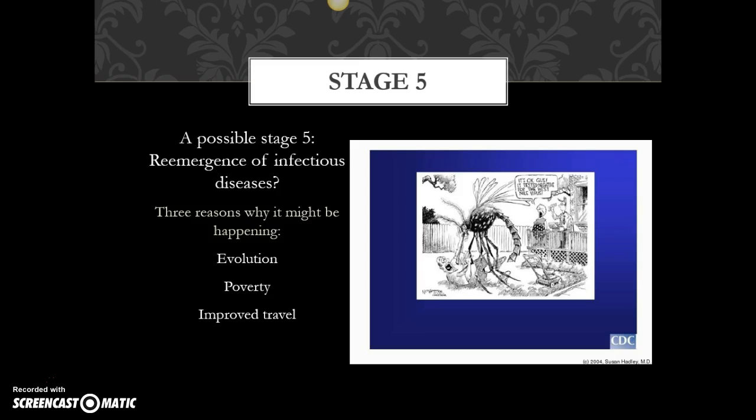This ties back to Haiti and cholera, and you can draw similar examples with Louisiana in the wake of Hurricane Katrina, where all of a sudden infectious diseases go up as access to clean water and other resources disappears. Improved travel is also a huge piece of this — we see this with things like the SARS outbreak, where a person got sick, hopped on an airplane from Asia to Canada, and infected basically everybody on the plane. That's a major reason why infectious diseases are reemerging.